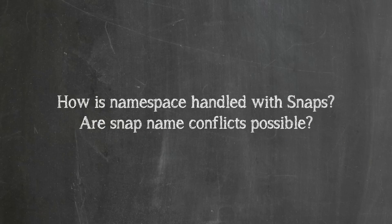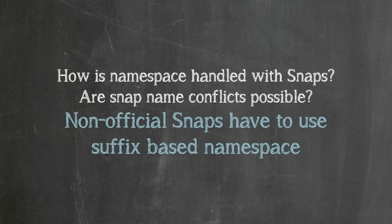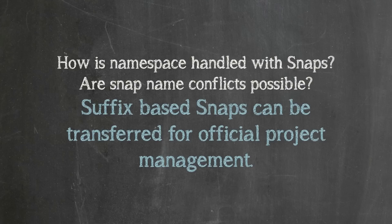How is namespace handled with snaps — are snap name conflicts possible? Officially managed snaps will be able to use the official non-suffix namespace, but if an individual creates a snap for something, they would need to add a suffix to indicate they are not part of the official team. For example, if ffmpeg were to make a snap they could name it simply 'ffmpeg', but an individual would have to name it something like 'ffmpeg-mton'. If a snap is published to the snap store non-officially with a suffix, but the official project wants to take over that snap, the management rights can be transferred and the namespace for the snap would become official, removing the suffix.